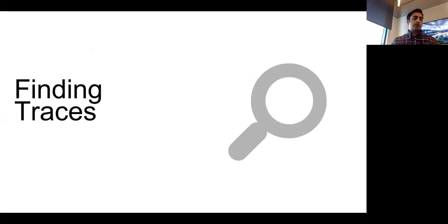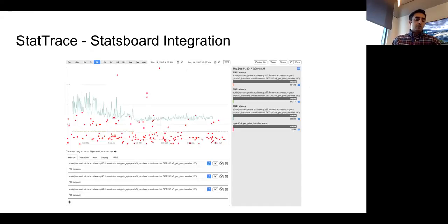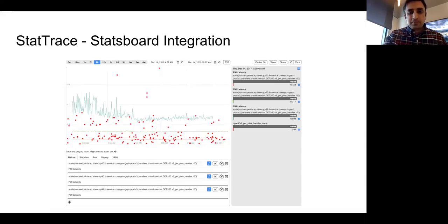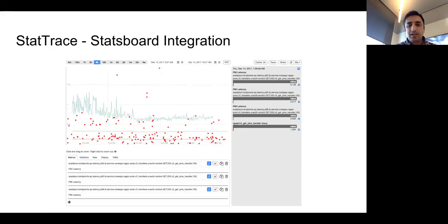Now that we can view a trace, the next problem was finding the most relevant traces for a given issue. Zipkin gives some functionality but no visual representation. So we integrated our tracing data with our metrics visualization tool called Stats Board — we overlaid trace data on top of metrics data. For example, when viewing metrics for a service endpoint, users can see which traces correspond to the p99 latency spike and quickly select those traces for investigation.